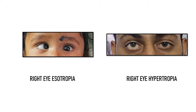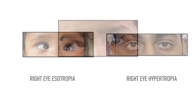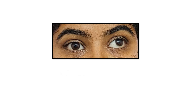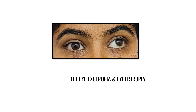An important thing to note is that sometimes an eye can be deviated in both horizontal as well as vertical direction. Like you can see in this patient, this child has right eye esotropia as well as right eye hypertropia. In another example, the patient has left eye exotropia and left eye hypertropia because the left eye is deviated both outwards as well as upwards.